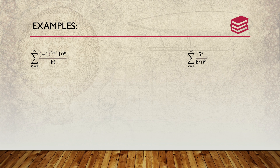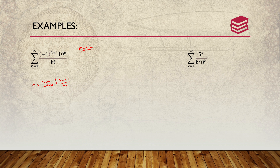In the first series example, we identify the appropriate rule. Since we have a factorial, we use the ratio test. The ratio test states that r equals the limit as k approaches infinity of |a_(k+1) / a_k|. Your a_(k+1) term replaces k with k+1 in the numerator, and the original term is in the denominator.